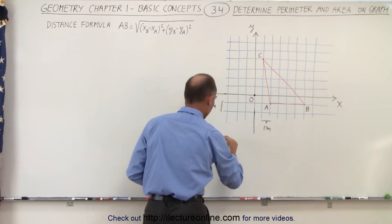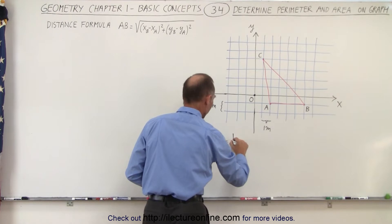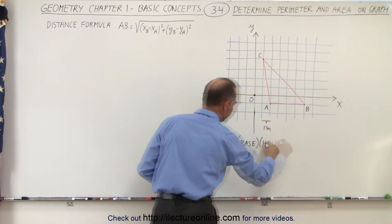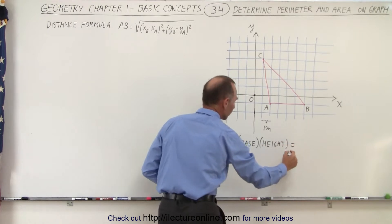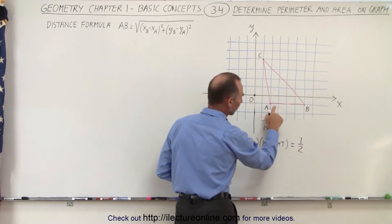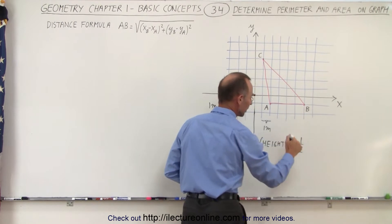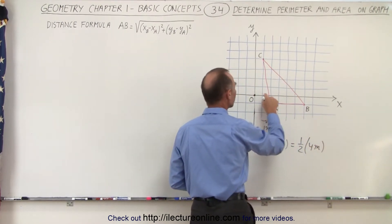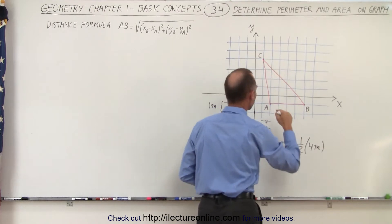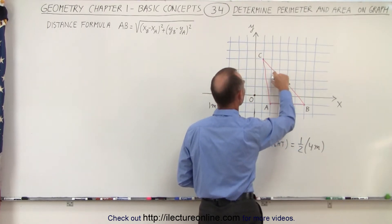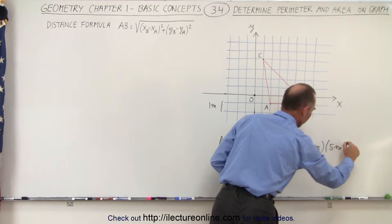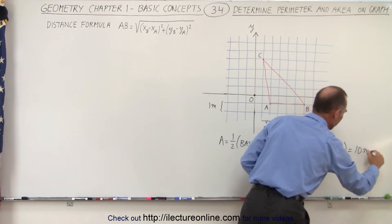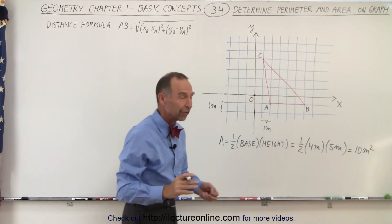We can say the area is equal to one-half times the base times the height. The base is 4 meters and the height is 5 meters. So that's 20 divided by 2, which gives us 10 meters squared for the area of that triangle.